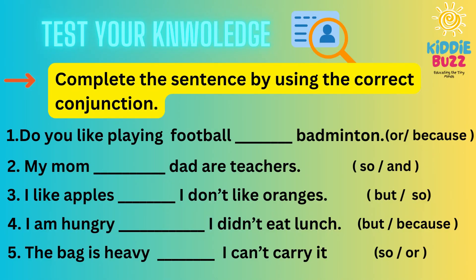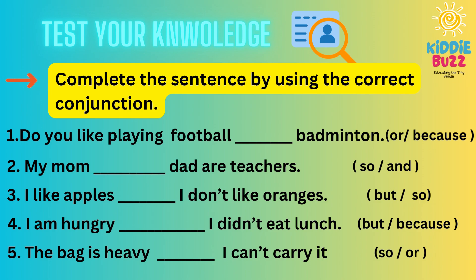Now it's time to test your knowledge. Complete the sentence by using the correct conjunction. First: 'Do you like playing football ___ badminton?' — options: OR or BECAUSE. Second: 'My mom ___ dad are teachers.' — options: SO or AND. Third: 'I like apples ___ I don't like oranges.' — options: BUT or SO. Fourth: 'I am hungry ___ I didn't eat lunch.' — options: BUT or BECAUSE. Fifth: 'The bag is heavy ___ I cannot carry it.' — options: SO or OR.